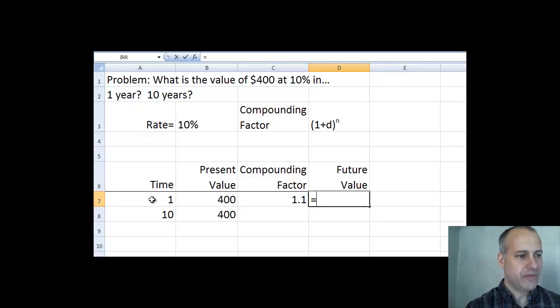And then to figure out the future value, we simply multiply the compounding factor times the present value. And we find out that our $400 in one year is worth $440.